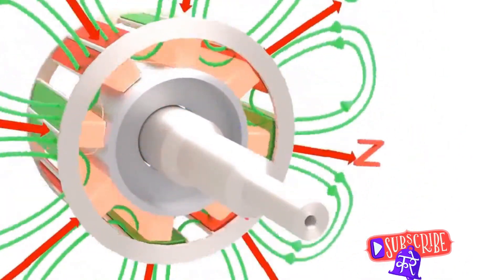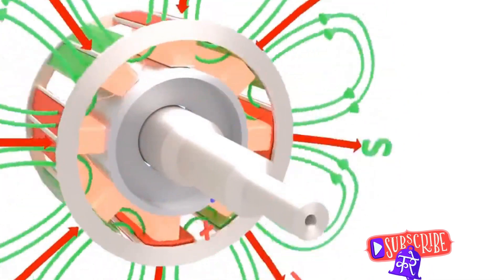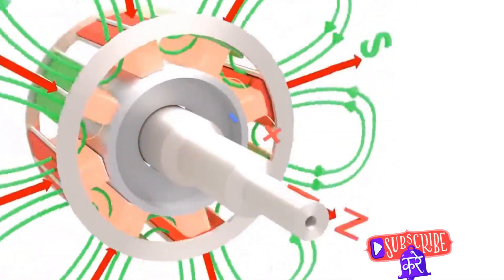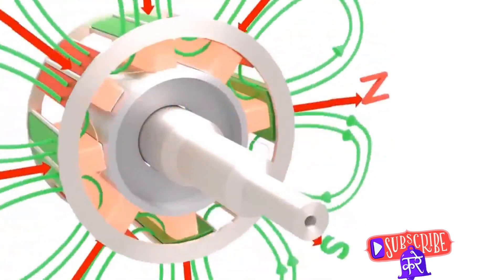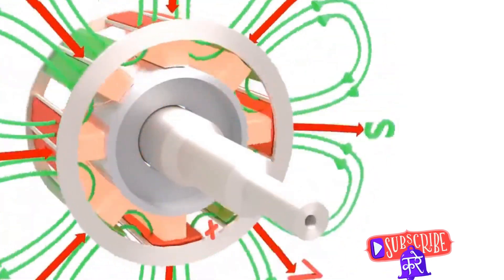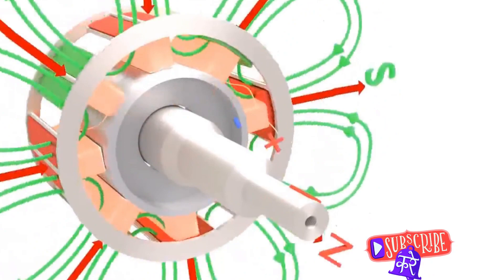This is where the term synchronous comes into play. The rotor's speed synchronizes with the frequency of the alternating current. It is this synchronization that allows the motor to maintain a constant speed, regardless of the load.